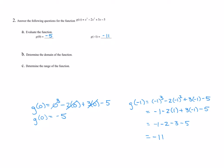Now let's do domain and range. Again, this is a polynomial function, so my domain is all real numbers, or negative infinity to positive infinity. For our range, this one we don't have to do any work. The leading term is x cubed — that is an odd exponent — so my range is also negative infinity to infinity.